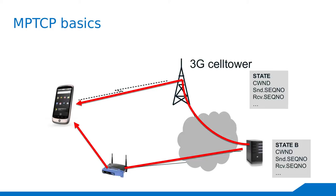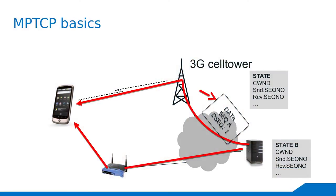Now we have two TCP subflows going on. Because we can send packets on either link, we need to order packets since the MPTCP connection is presented to the user like a regular TCP session. MPTCP has options that map subflow packets to the connection level — a double sequence space, one for the subflow and one for the multipath connection overall. The data sequence tells you how to order packets across the connection, and a data-level ACK acknowledges packets at the MPTCP connection level.